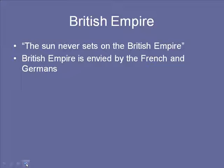The British Empire was envied by the French and the Germans who tried to emulate it. The French had Southeast Asia — Vietnam, Cambodia, and Laos were part of the French Empire. The French were getting rubber, tin, rice, and other resources from Southeast Asia. The French also had parts of Africa like Algeria, Tunisia, and Morocco. The Germans had East Africa and small outposts in Africa — nothing really impressive by imperialist standards.